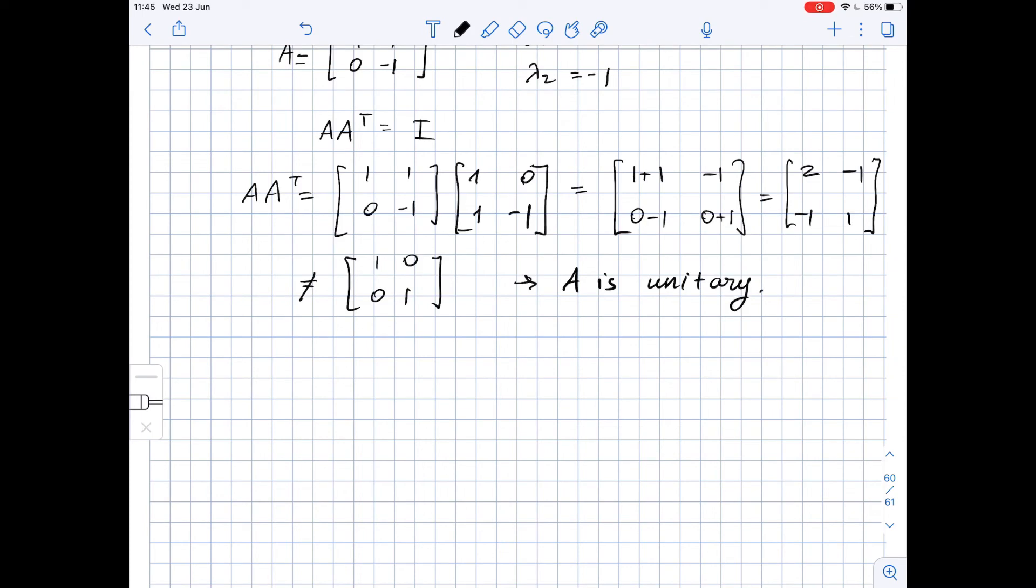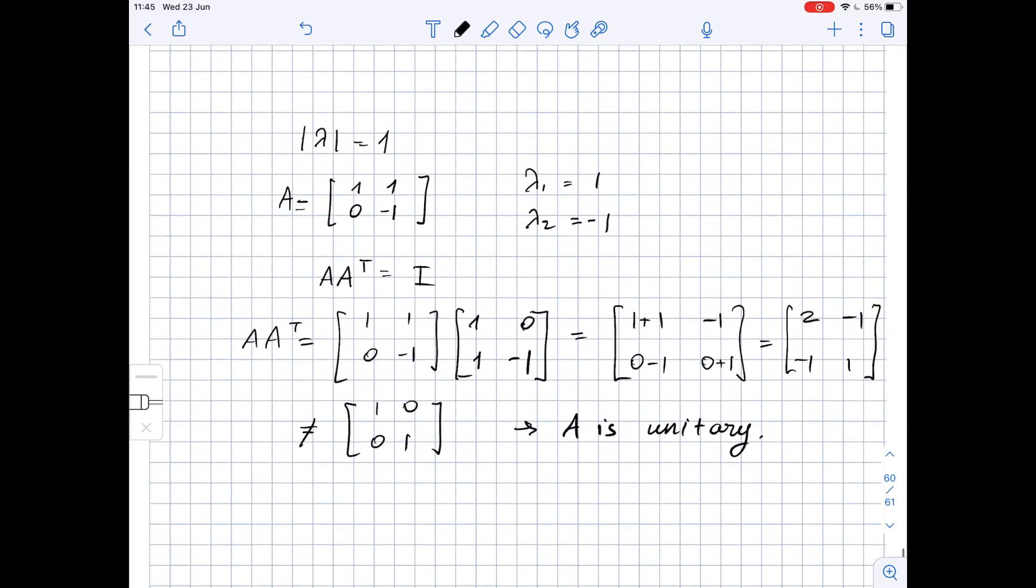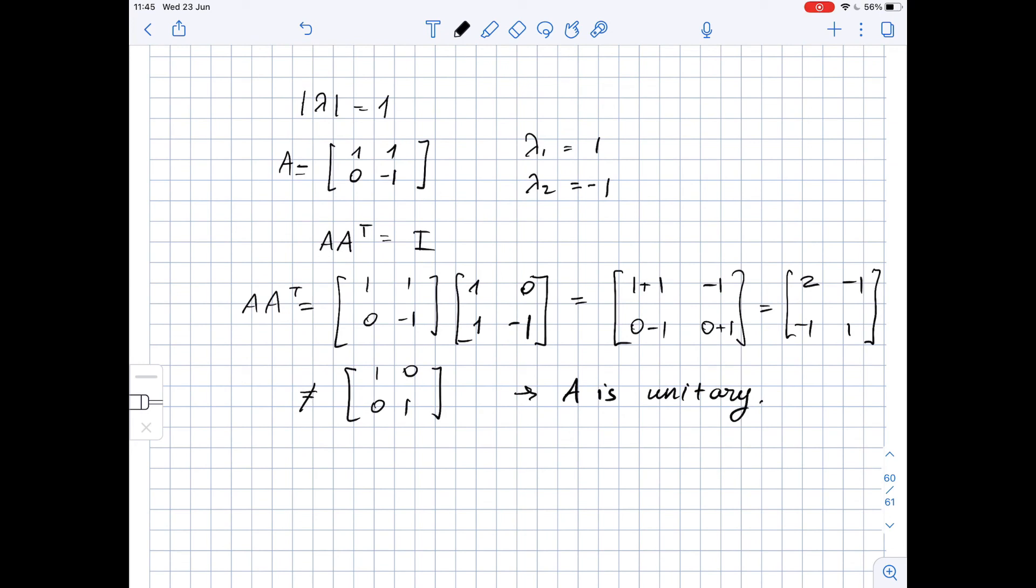That proves that our statement is false. It's not necessarily true because we had matrix A, which is diagonalizable and whose eigenvalues equal 1 and -1, and matrix A is not unitary. So the statement is false, and we have provided a counterexample.